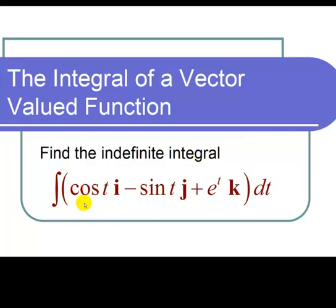We have the integral of the cosine of ti minus the sine of tj plus e to the tk all dt.